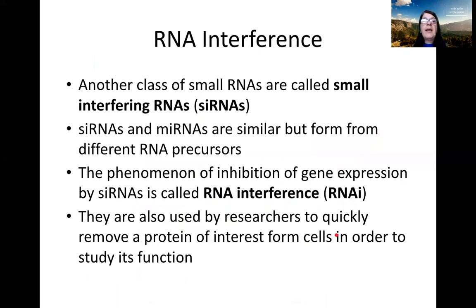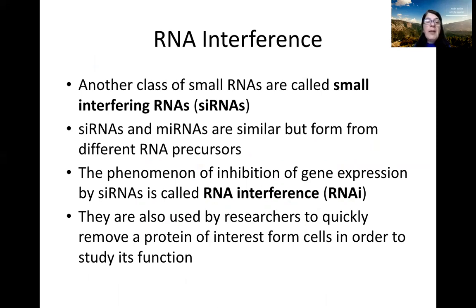Another class is called small interfering RNAs. Small interfering RNAs and microRNAs are very similar but come from different precursors. The phenomenon of inhibition of gene expression by small RNAs is called RNA interference — the RNA interferes with gene expression. These are also used by researchers to quickly remove a protein of interest from cells in order to study its function. You're likely to encounter them on the exam in scenarios where researchers express small RNAs complementary to a given mRNA to abolish the production of a given protein.